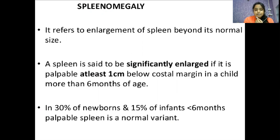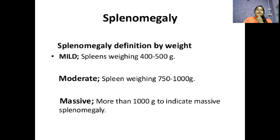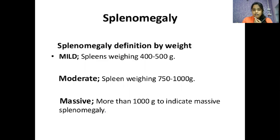In 30% of newborns and 15% of infants less than six months, palpable spleen is a normal variant. Splenomegaly has different definitions by weight: mild splenomegaly is counted when spleen weighs 400 to 500 grams, moderate when spleen weighs 750 to 1000 grams, and massive is more than 1000 grams.